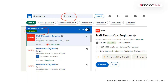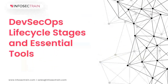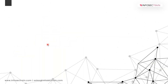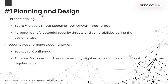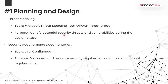Now I'm entering into the technical concepts of the DevSecOps lifecycle — the stages and essential tools. The first stage is planning and design, where you plan and design the exact requirements. Under this we have threat modeling, where we think as an attacker during the design phase itself, identifying potential security threats and vulnerabilities during the design phase.